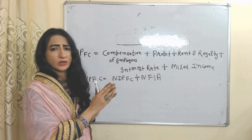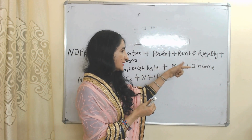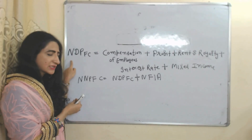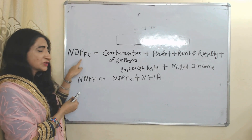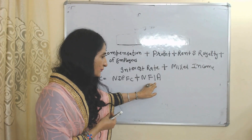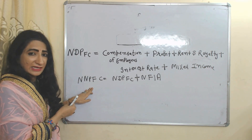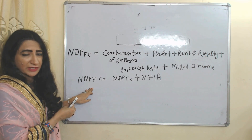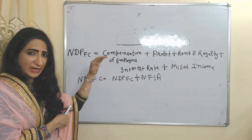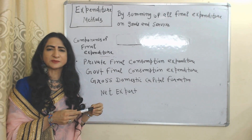When we add all components of factor income — compensation of employees, profit, rent and royalty, interest, and mixed income — it becomes equal to Net Domestic Product at factor cost (NDPFC). When we add net factor income from abroad to NDPFC, it becomes NNPFC, which is Net National Product at factor cost, and that equals our national income. So by this method, we can calculate national income using the income method.